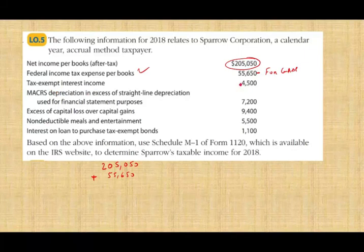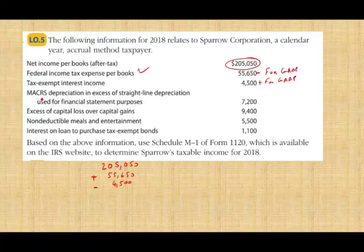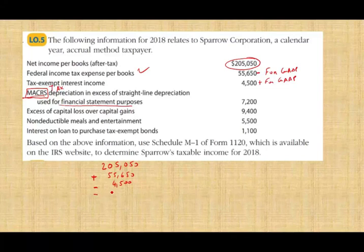Tax-exempt interest income of $4,500: for GAAP we include all income, but for IRS it's not taxable. So we subtract $4,500 — which is good, it means it's not taxable for us. MACRS depreciation in excess of straight-line depreciation: MACRS is tax depreciation. We have $7,200 of tax depreciation in excess of GAAP straight-line depreciation. On the financial statement, when we computed net income, our depreciation was $7,200 less than MACRS. Therefore we have to deduct an additional $7,200 — which is good, it lowers our taxes.